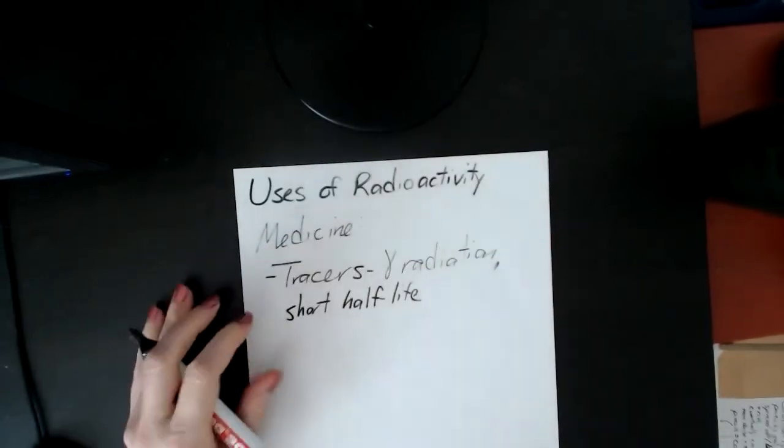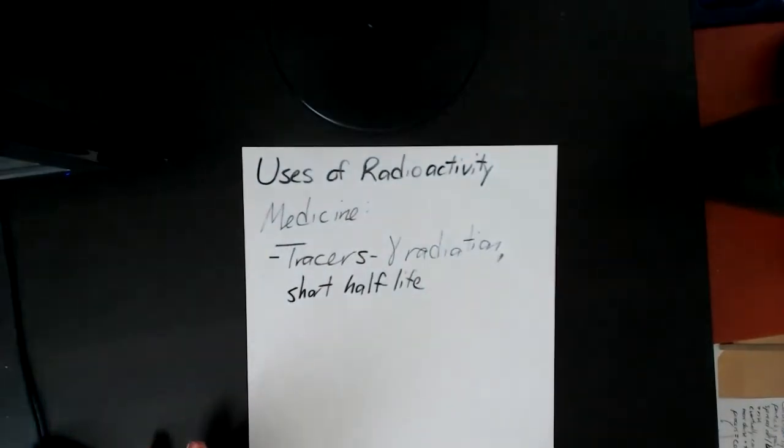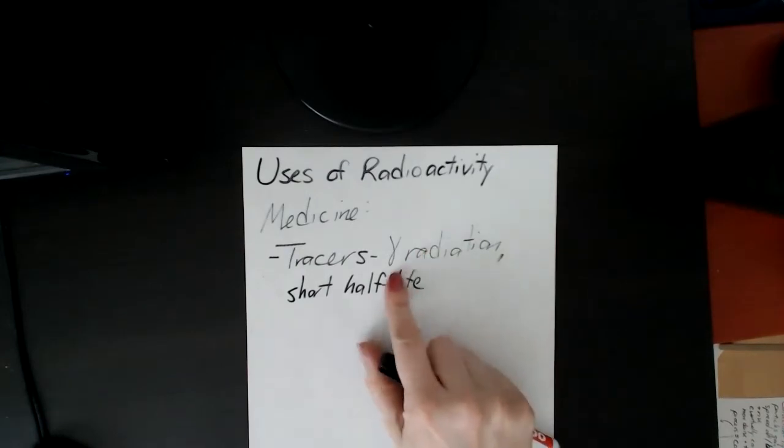So it has to be gamma radiation, but it also has to have a short half-life because you don't want that gamma radiation in your patient for days and days and days. Obviously, that's not going to go very well. So those would be the requirements for what you would want a tracer to be.